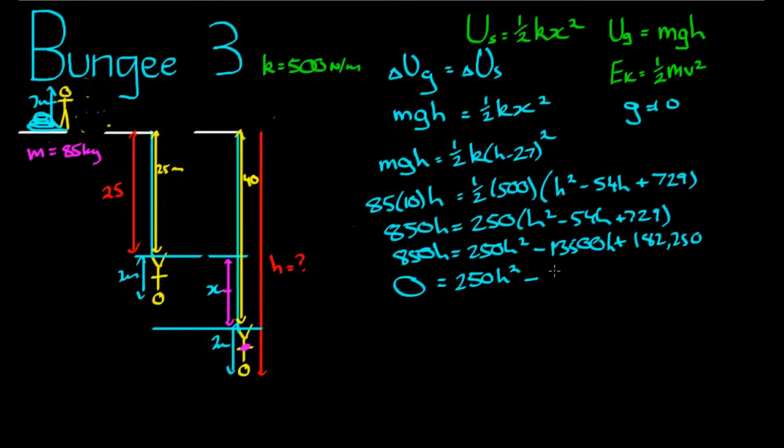So 250h squared take away 13,500... No, that's right, we were taking away 850 from both sides. So 13,500, negative 13,500, take away 850 is equal to negative 14,350h, that h carries down, plus 182,250.